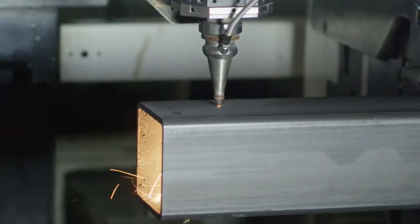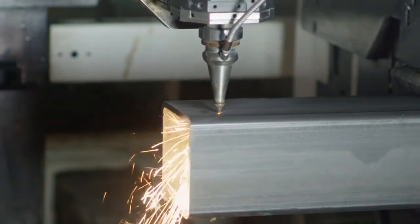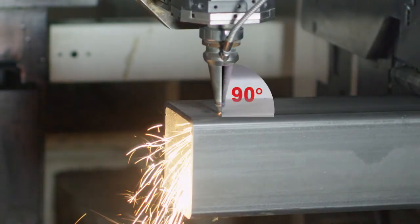When cutting the square tubing using the normal to surface process, the laser head is positioned exactly 90 degrees to the surface of the wall of the square tubing.